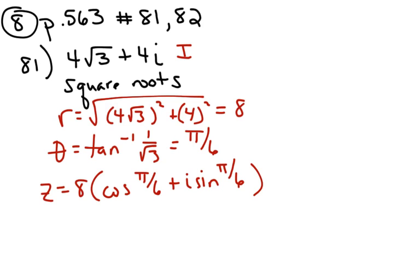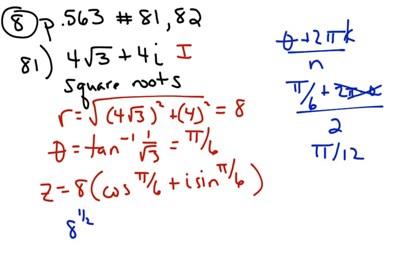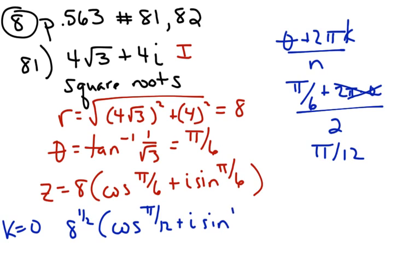When finding the square roots, we're going to start by taking the square root of 8. The formula for the angles is: take the angle plus 2pi times k, divided by n, where n is the root. For k=0, we get pi/6 plus 0, divided by 2, which is pi/12. So the first root is 2√2 cosine(pi/12) plus i sine(pi/12). Since pi/12 is not one of our special angles, we leave it as is.